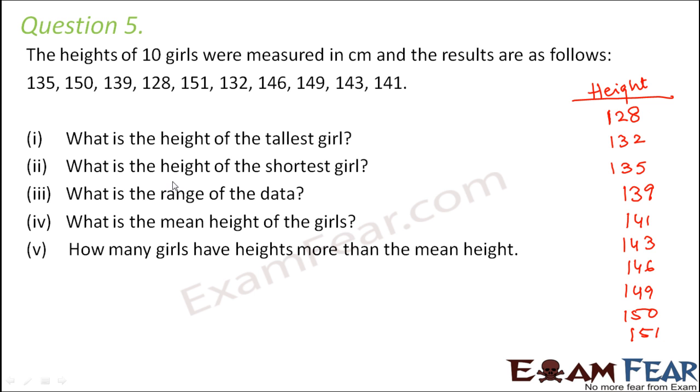The first question is, what is the height of the tallest girl? So the tallest girl, that is the height at the end because this is the biggest number, so 151 centimeters would be the height of the tallest girl. What about the height of the shortest girl? So definitely the shortest girl would be 128 centimeters.